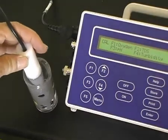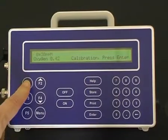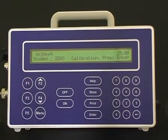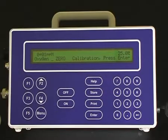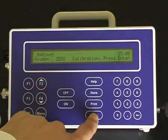Allow it to equilibrate. Press F1 to calibrate oxygen. Allow sufficient time for the dissolved oxygen sensor to equilibrate to a zero. This may take three to five minutes. Once the dissolved oxygen sensor has equilibrated in the zero solution, press the enter button to calibrate the zero point.